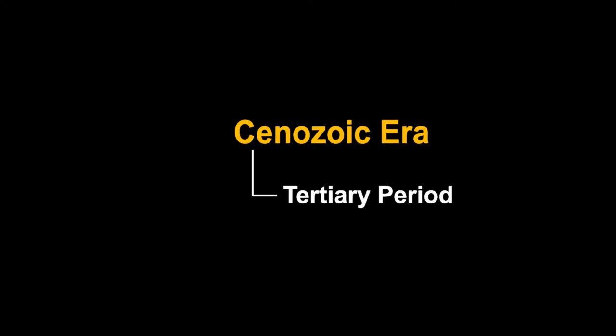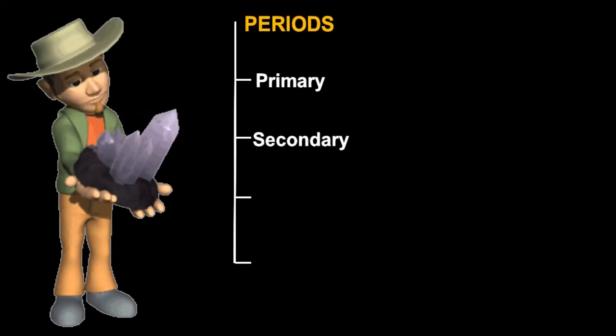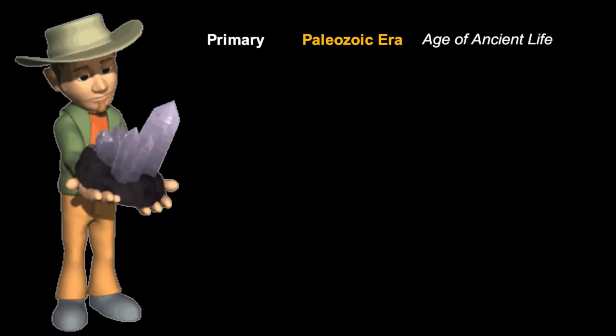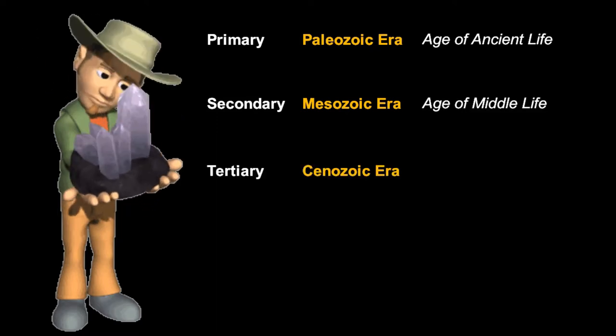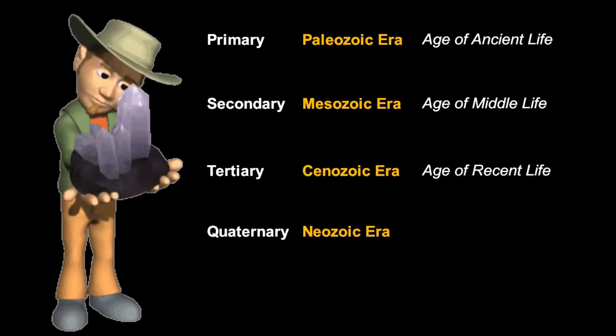Unlike all the other eras we studied — the Precambrian Era, the Paleozoic Era, the Mesozoic Era — the Cenozoic Era has just one period called the Tertiary Period. This name was left over from 18th century geologists. When early geologists studied the history of the earth, they named periods Primary, Secondary, Tertiary, and Quaternary. Later they changed names based on the places where fossils were found. The Primary Era became the Paleozoic Era, meaning the age of ancient life. The Secondary Period became the Mesozoic Era, meaning the age of middle life. The Tertiary Period became the Cenozoic Era, meaning the age of recent life, and the Quaternary Period was changed to the age of new life.